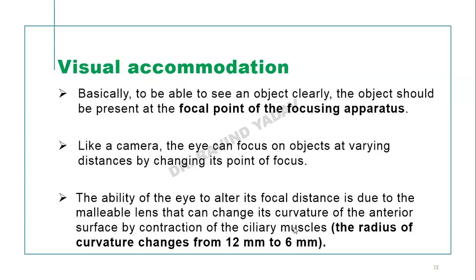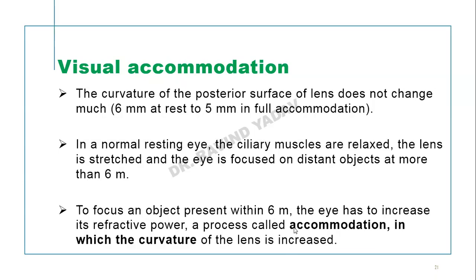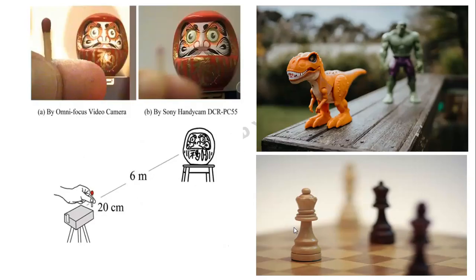Another topic is visual accommodation — it is basically the capability of the eye to see objects clearly by focusing at a given focal point. For example, if you are looking at a near object like a toy dinosaur, that is near vision, and you blur the distant object while bringing the near one into clarity.